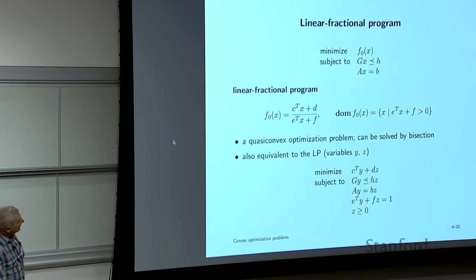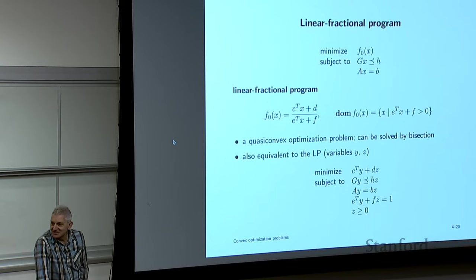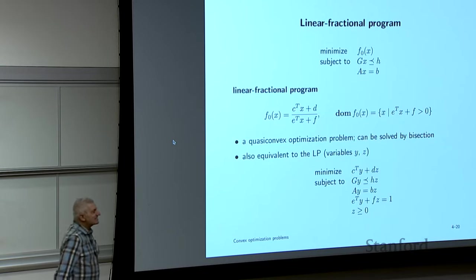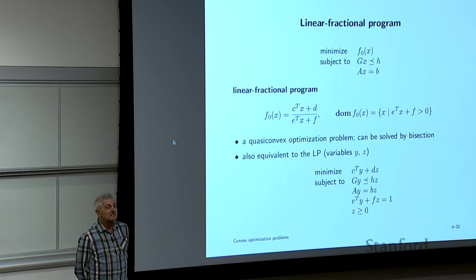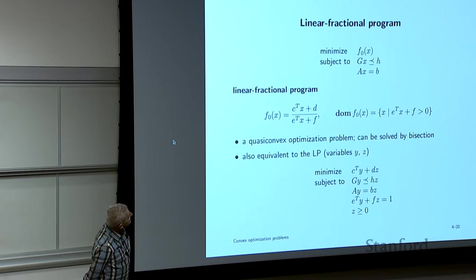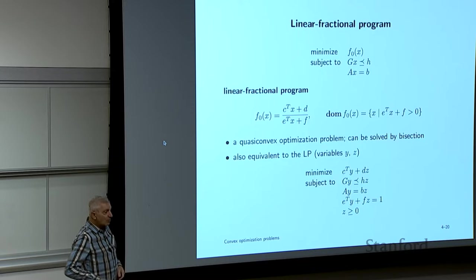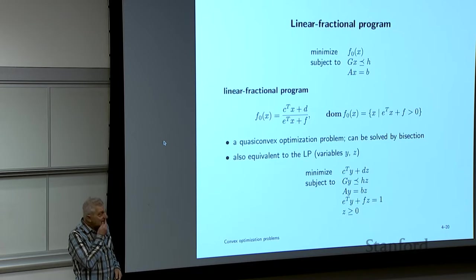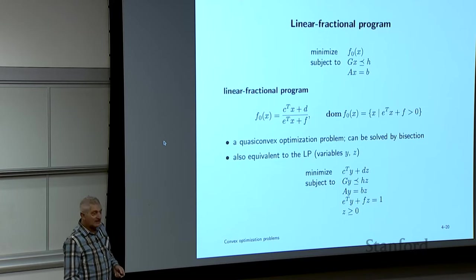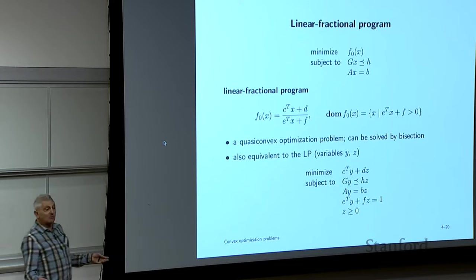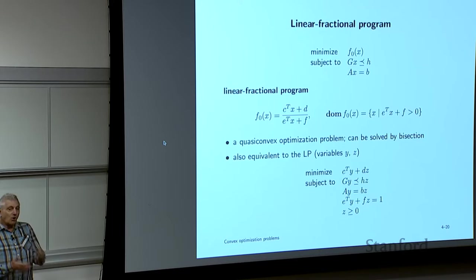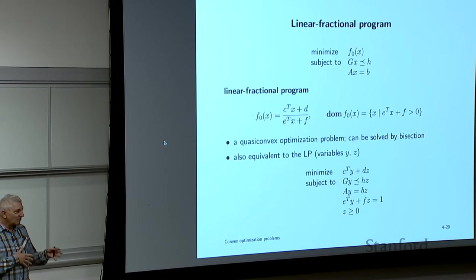Around 1950 or so, we get the linear fractional program: minimize a ratio of two affine functions (a linear fractional function), where by convention the domain is where the denominator is positive, subject to a polyhedron. It's a quasi-convex problem, so you can always solve it by bisection, calling an LP solver at each step.